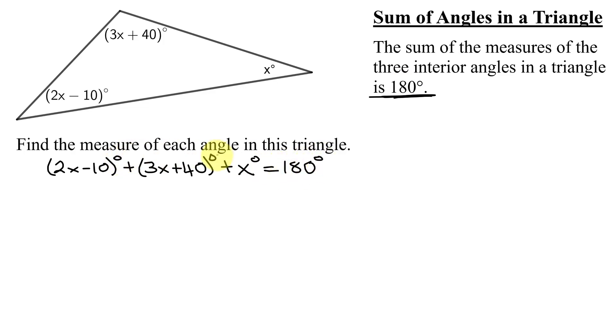As all my angles are in degrees, I'm not going to write the degrees symbol until I get to my final answers. Now, do I need these parentheses here? No, I just have a plus 1 in front of both of them. So this is 2x minus 10 plus 3x plus 40 plus x equals 180.